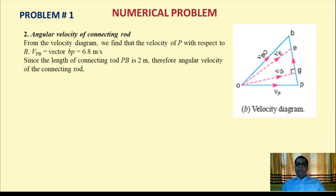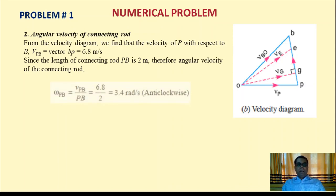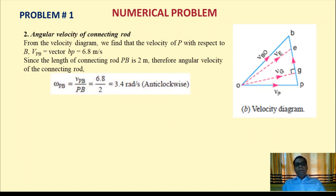For the angular velocity of the connecting rod, from the velocity diagram we find that the velocity of P with respect to B, VPB = vector bp = 6.8 m/s. Since the connecting rod length PB = 2 m, the angular velocity omega_PB = VPB / PB = 6.8 / 2 = 3.4 rad/s in the anti-clockwise direction.